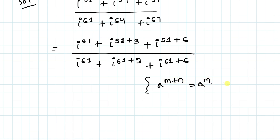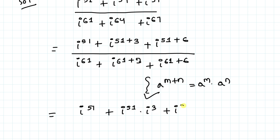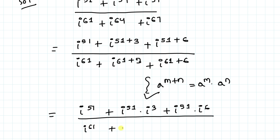Now we know the exponential law that a to the power m plus n equals a to the power m multiplied with a to the power n. Applying this rule in both numerator and denominator, we have: iota to the power 51 plus iota to the power 51 times iota cubed plus iota to the power 51 times iota to the power 6, divided by iota to the power 61 plus iota to the power 61 times iota cubed plus iota to the power 61 times iota to the power 6.